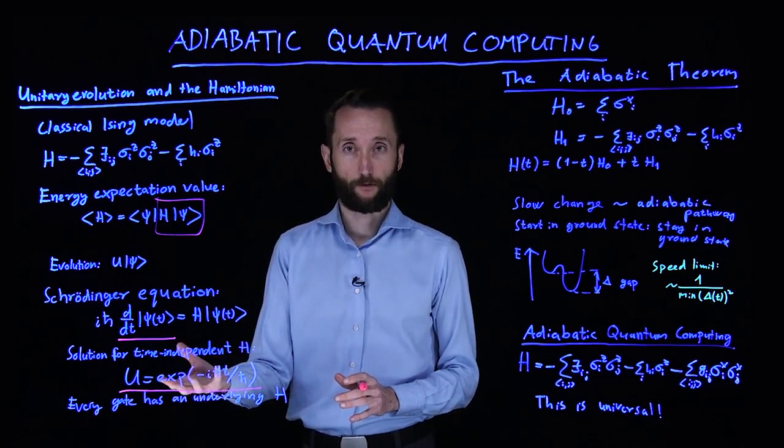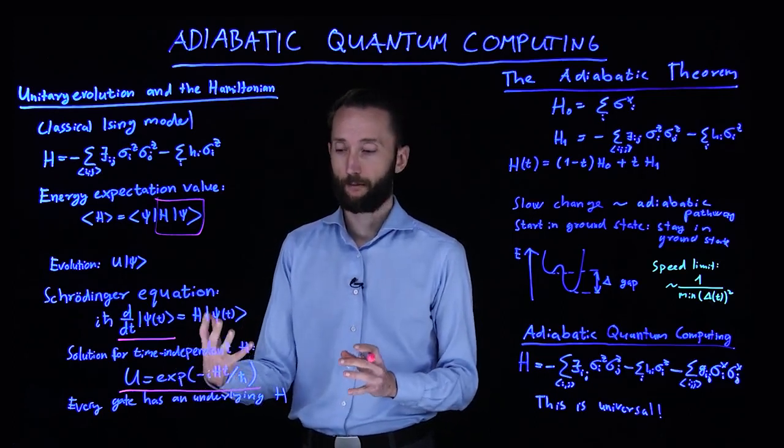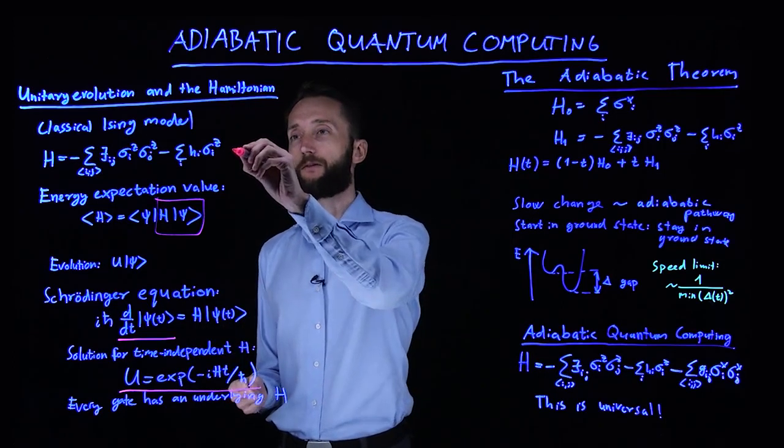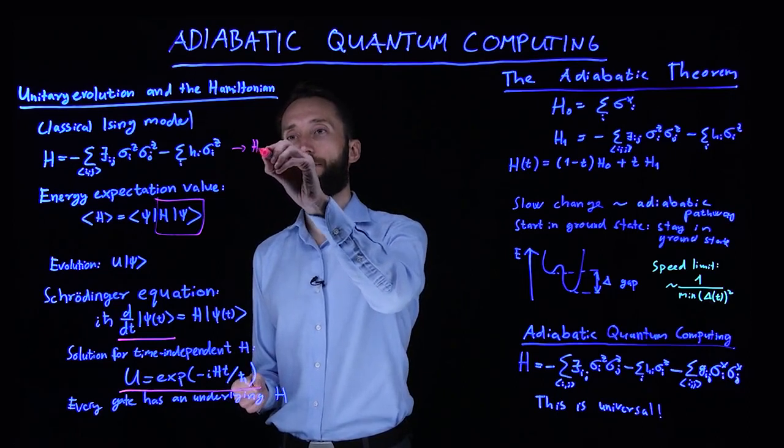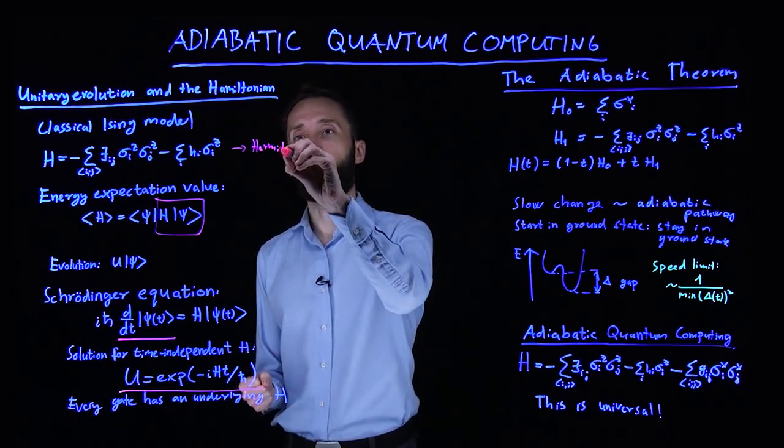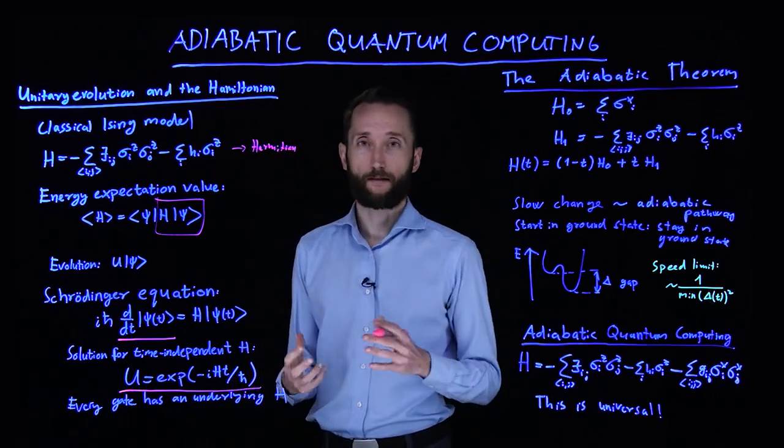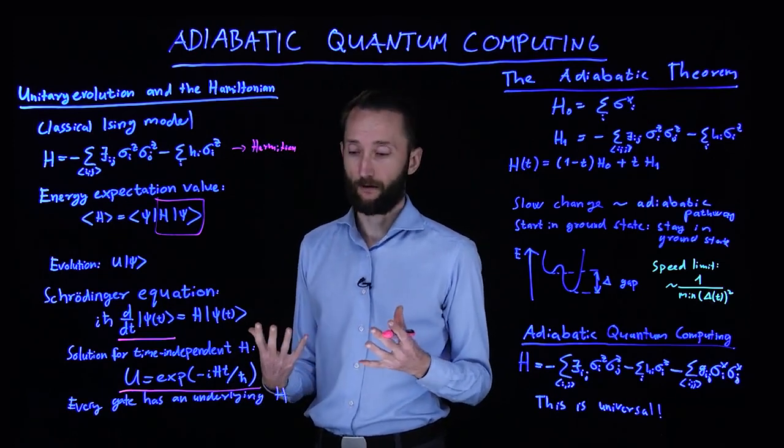So basically every unitary operation has an underlying Hamiltonian, and every gate in a gate-model quantum computer has an underlying Hamiltonian. And the Hamiltonian is always a Hermitian operator, which means that its adjoint is itself.